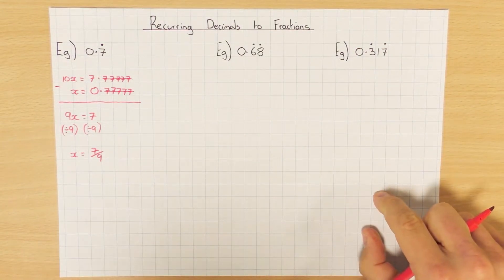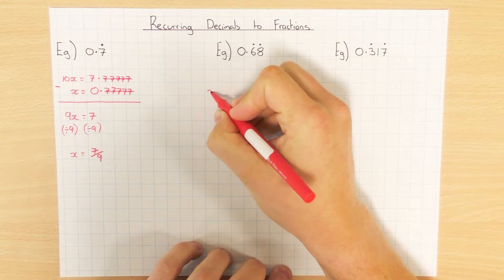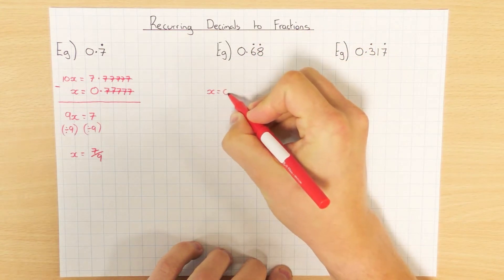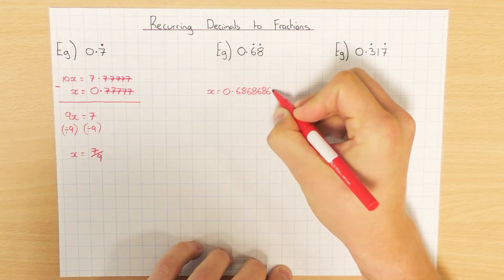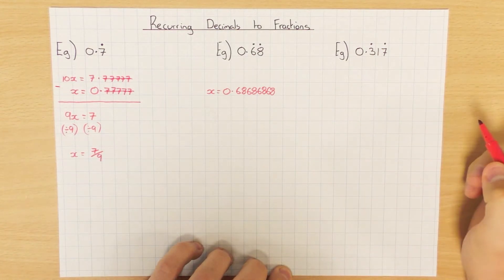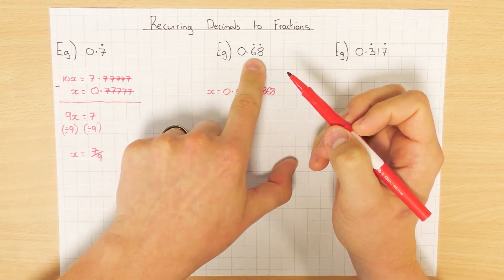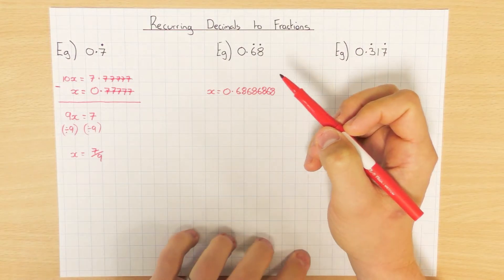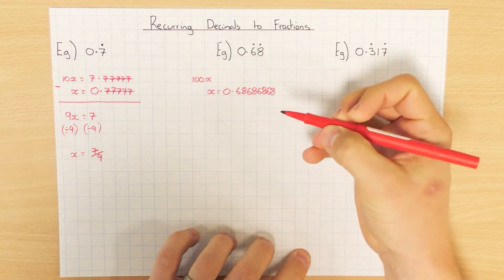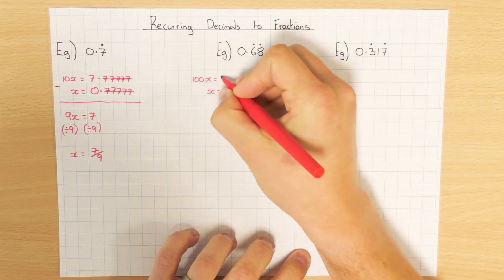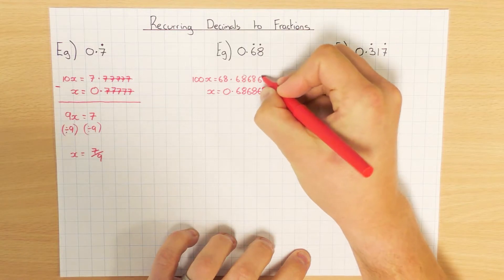Let's carry on and have a go at the next one, which is 0.68 recurring. Exactly the same method — I'm going to set x to equal my recurring decimal, so 0.686868 and so on. In this case, two numbers are reoccurring so I'm going to times it by 100. So that's going to be 100x, and all that means is they're going to shift two to the left, so that's going to be 68.68686868.